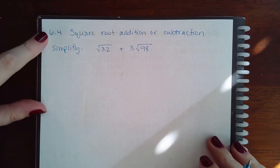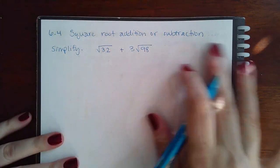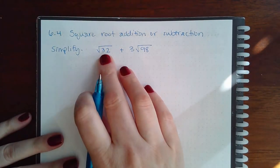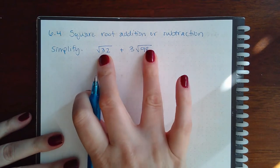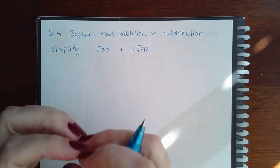Here we have six point four, the square root addition or subtraction. Simplify. The radicands—what's inside the radicals—do not match, so we cannot add them and subtract them the way they are right now.